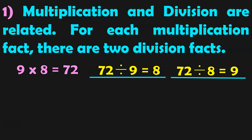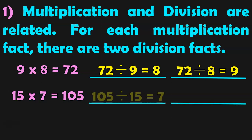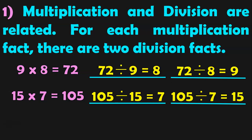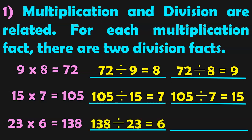Let us do more examples to understand this better. 15 into 7 is equal to 105. The two division facts are: 105 divided by 15 is equal to 7, and 105 divided by 7 is equal to 15. Another example: 23 into 6 is equal to 138. The two division facts are: 138 divided by 23 is equal to 6, and 138 divided by 6 is equal to 23.